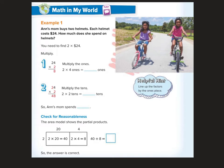Ann's mom buys two helmets. Each helmet costs, so we're buying two helmets, and each one is $24. How much does she spend on helmets? We need to find 2 times 24 to solve this problem.